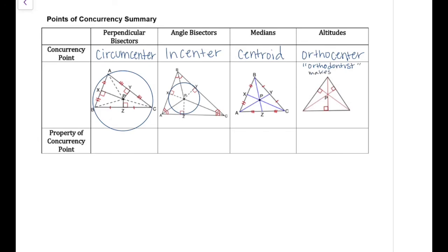So remember, orthodontists make your teeth straight. They make it have right angles. Centroid, it's the center of the opposite side. So that's the way that you can remember how to find which one is which.